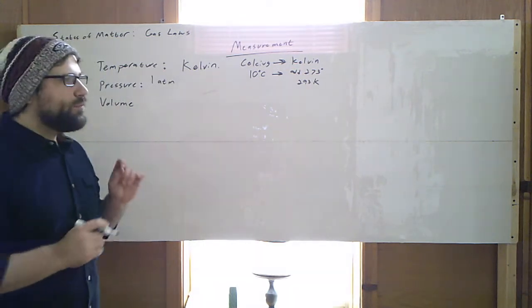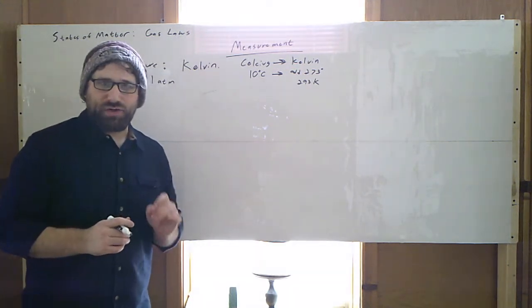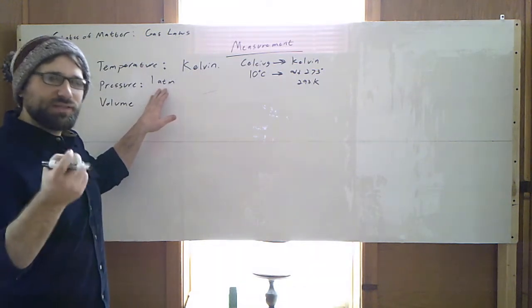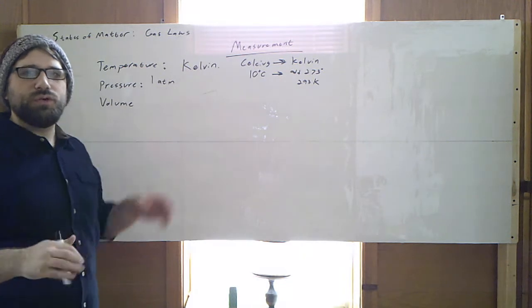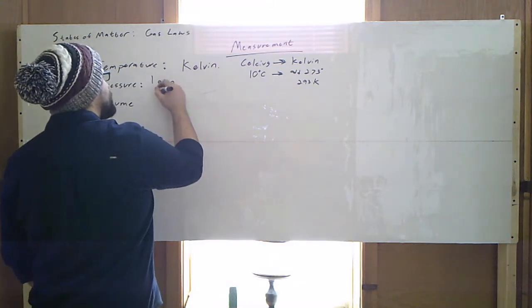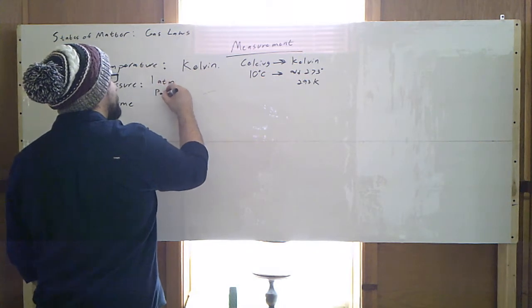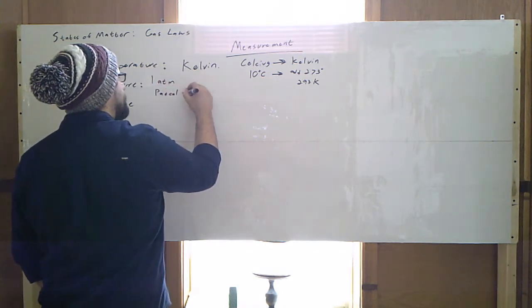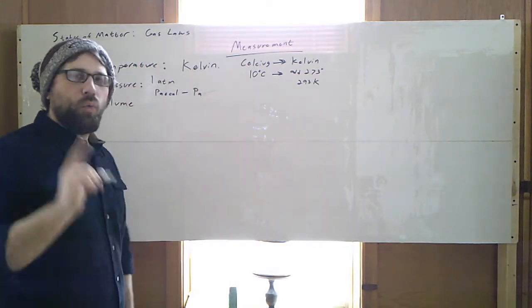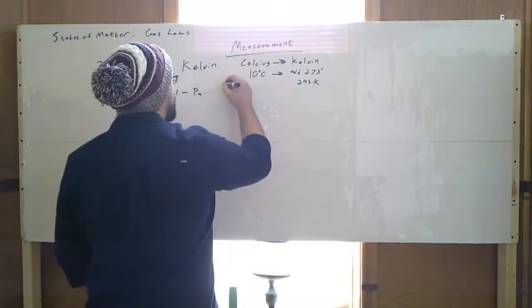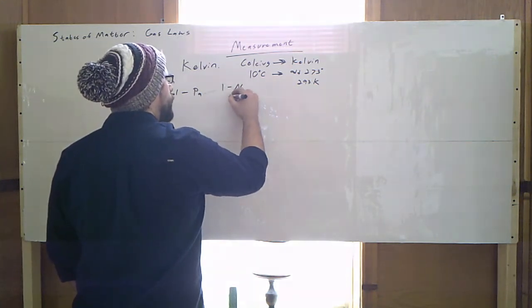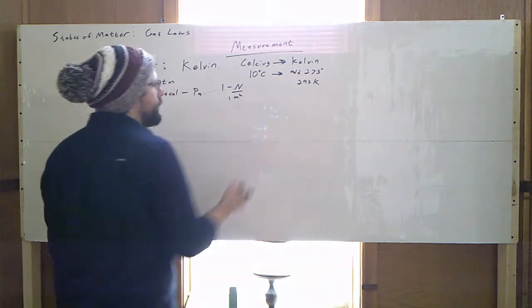However, the more accurate way of measuring things, because we want to be able to think of things anywhere in the universe, we need a solid system of measurement. We use the SI units of pascals, abbreviated P-a, capital P, lowercase a. One pascal is equal to one newton of force over one square meter.